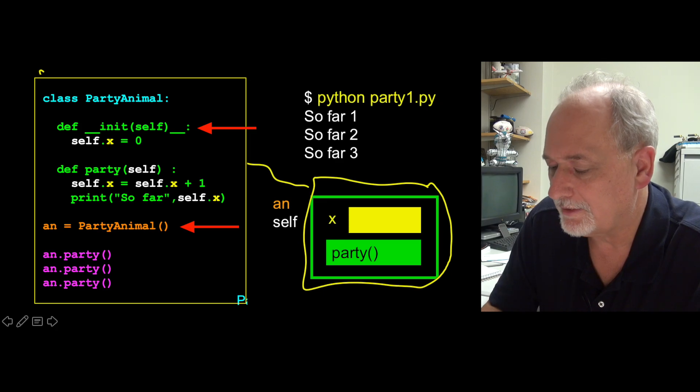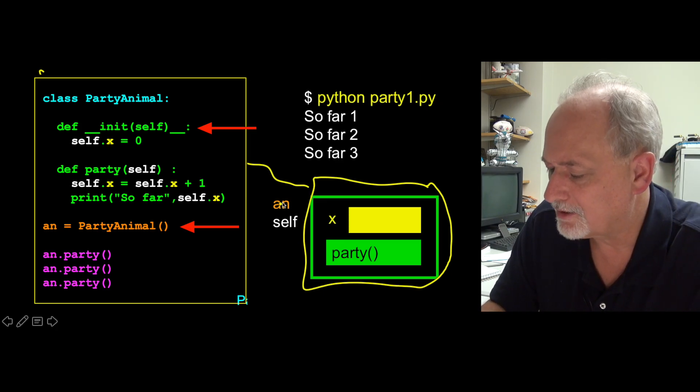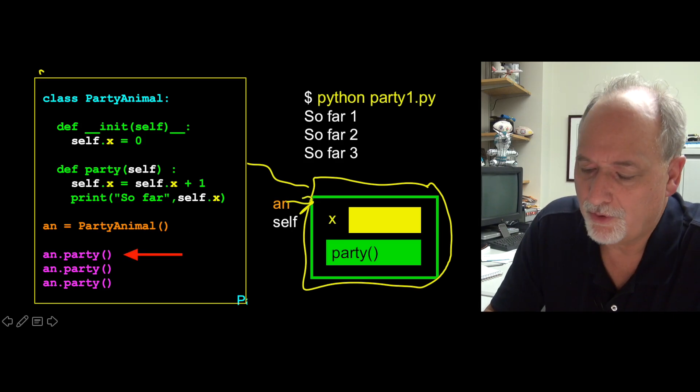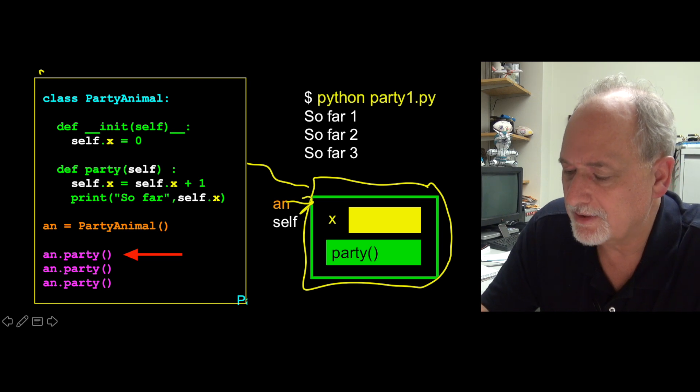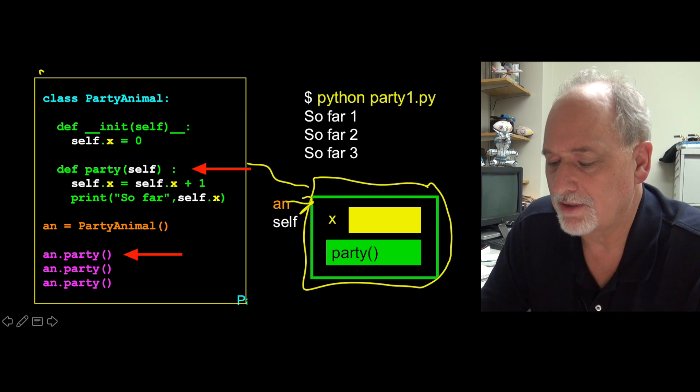And then we construct that, that's what the party animal does. And then we assign that into an. And so an is now pointing at that. Then when we call the party method, that basically takes this an and passes it in as the first parameter, which is used as self.